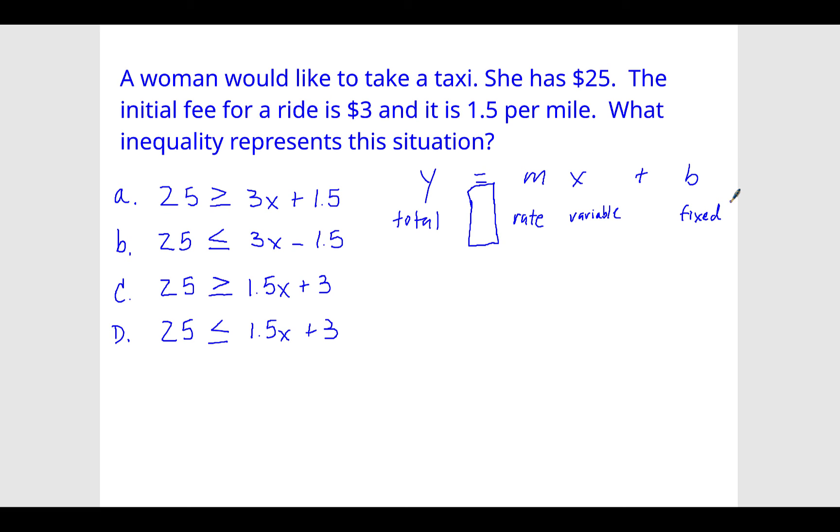Okay, so now let's go back and read the problem. A woman would like to take a taxi. She has $25. The initial fee for the ride is $3. Okay, boom. Ding, ding, ding, ding. Initial fee, $3. That's the word that you can use to come up with fixed or that's equal to the fixed amount.